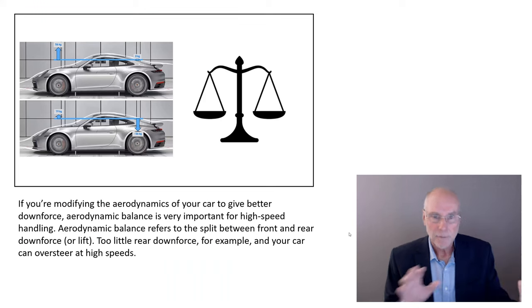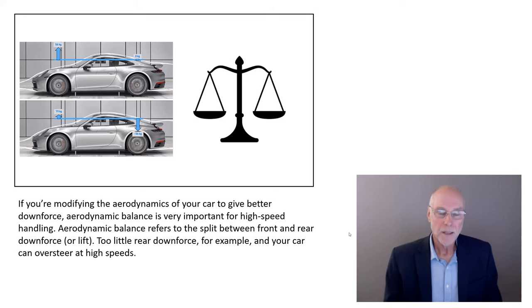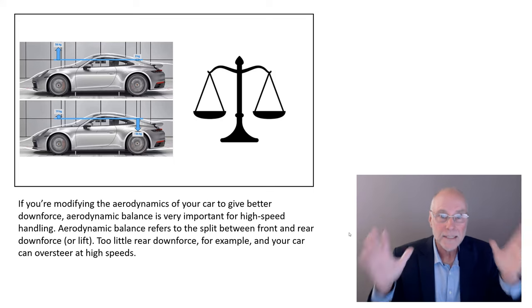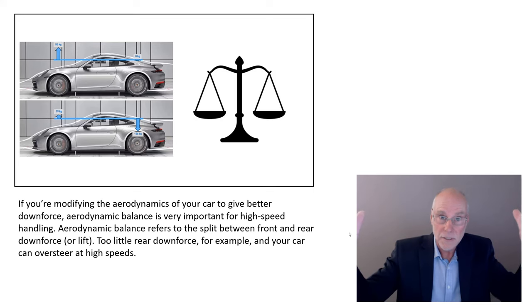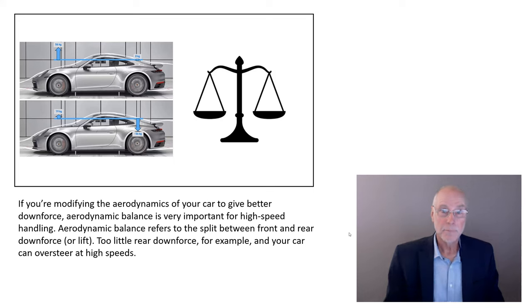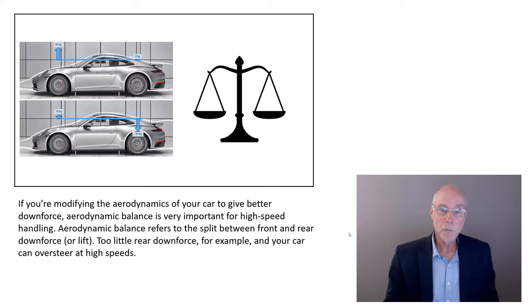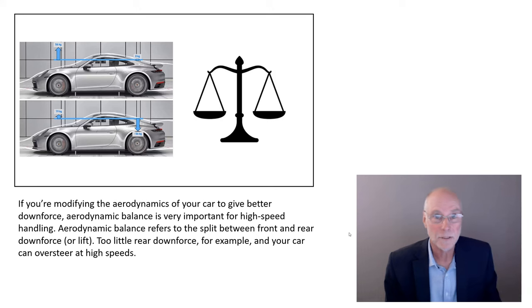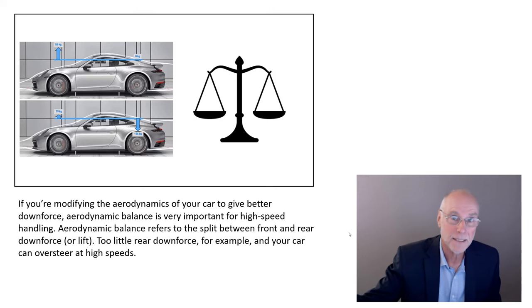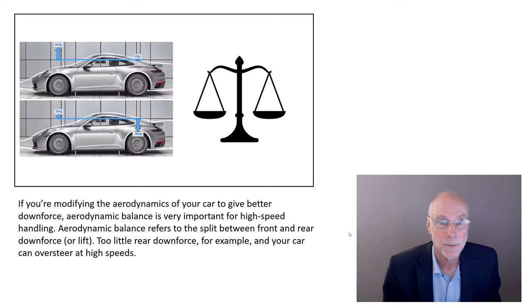Let's think about downforce. Lift is far more common, but it's easy to understand if we talk about downforce. Downforce is the aerodynamic pushing down at the back of the car and the front of the car. Let's imagine we have equal downforce front and back. As we go faster, the downforce increases rapidly with speed, but the balance stays the same. But what if we have more downforce at the front than the back? We go faster and faster, we get more and more downforce at the front and, in relative terms, less and less at the back. That's going to give you high-speed oversteer.